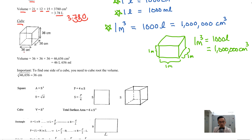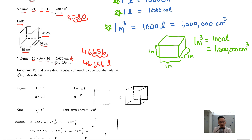Let's try and find the volume of a cube. You have a cube of 36 cm by 36 cm by 36 cm. The volume is 36 times 36 times 36, which equals 46,656 cm³. To convert to liters, move back 3 decimal places: it equals 46.656 liters, or you can say 46 liters and 656 milliliters.